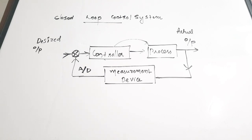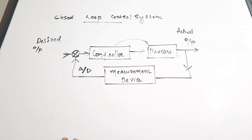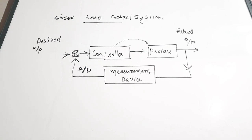Next is the most important part: the comparison between open loop and closed loop control systems. When approaching this topic from a competitive exam point of view, the comparison part is the most important one, because a lot of questions can come from the comparison between these two systems.